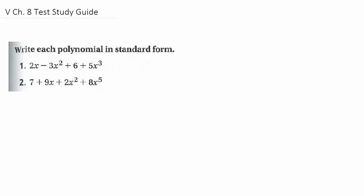This is the study guide for the chapter 8 test. When you want to write something in standard form, remember that you are writing from the highest power to the lowest power. We want to put the 5x cubed first, and if we can, we would combine like terms, but in these there could be none to combine. The next highest power, then the next highest, and finally the lowest power, which in this instance happens to be a constant term.